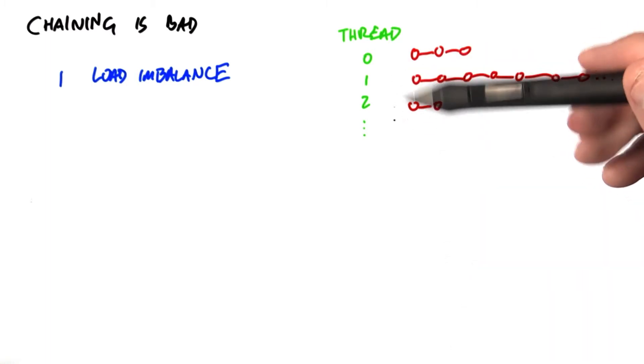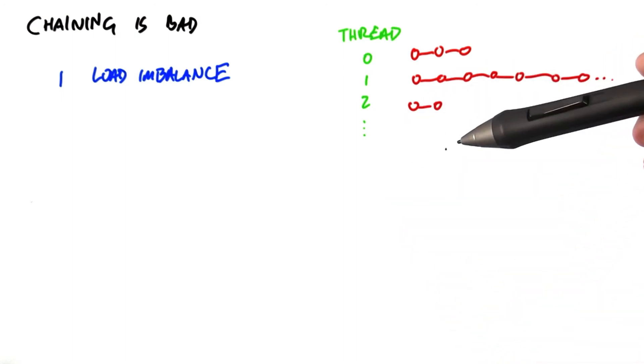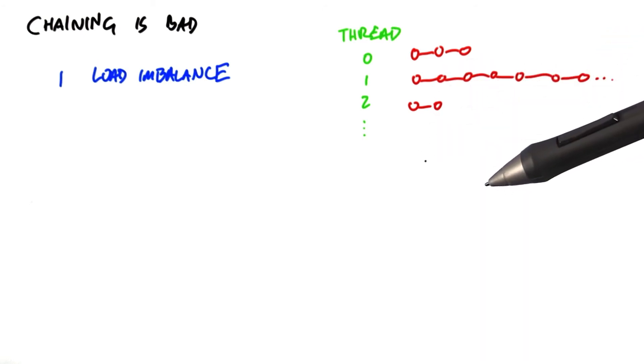Because threads within a warp run in lockstep, the runtime of a warp is completely dependent on the slowest lookup within the warp. The other threads in the warp have to wait until the slowest item is found.